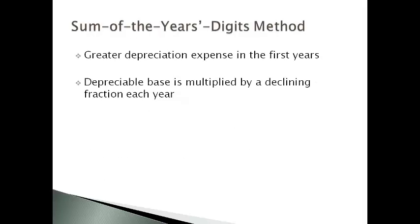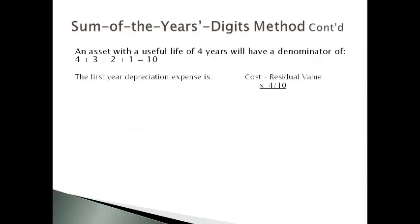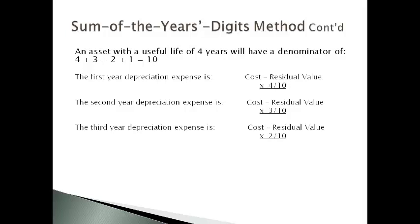The sum of the years' digits method accelerates depreciation expense in the first years in a rational manner. The depreciable base is multiplied by a declining fraction each year. The denominator is always the sum of the estimated useful life numbers, and the numerator begins with the useful life and decreases by one for each subsequent year. For example, with a useful life of 4 years, you start with 4 and work down adding all the numbers together; then cost less residual value is multiplied by the highest number first over the total, with each subsequent year using the next lowest number.